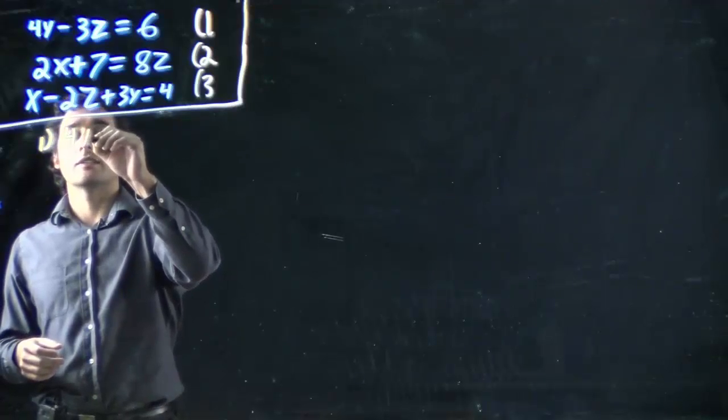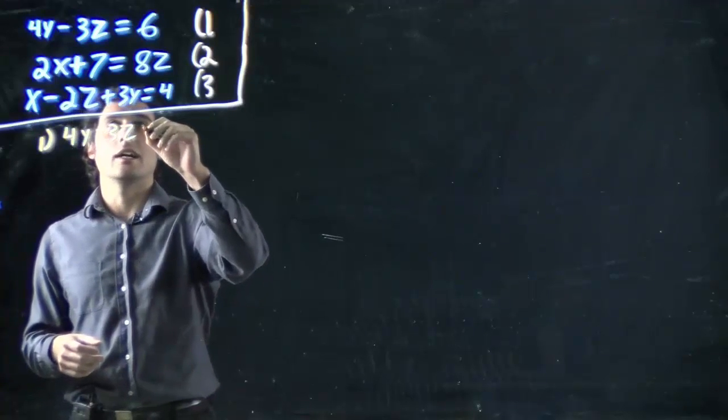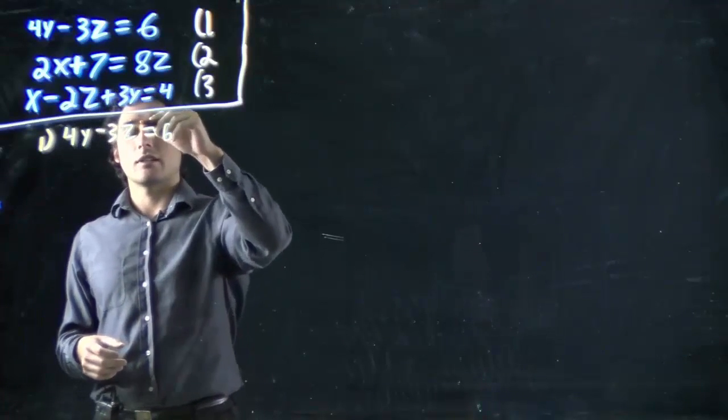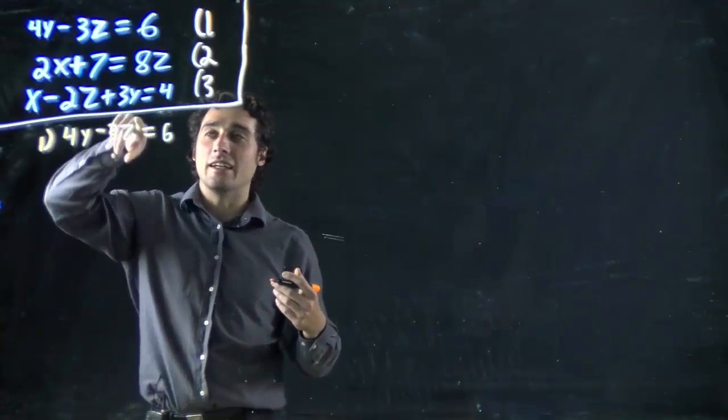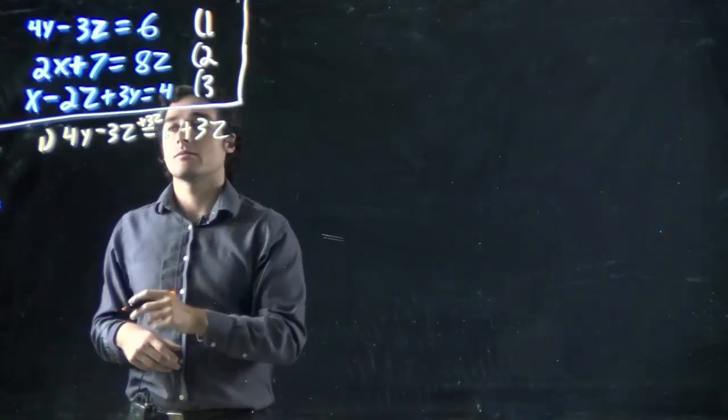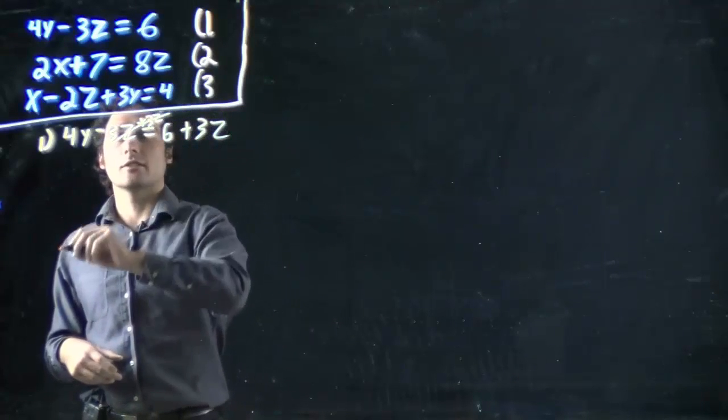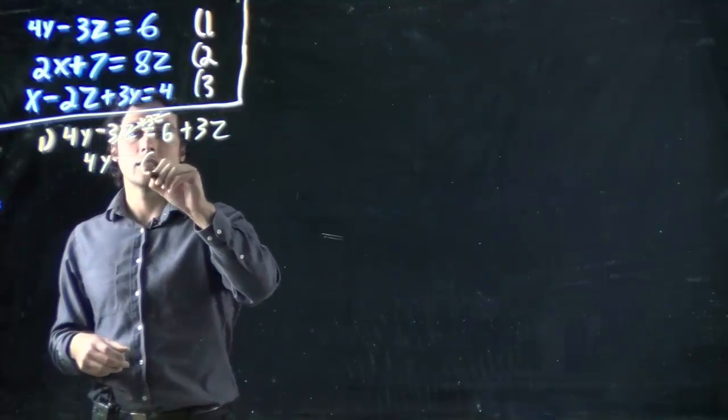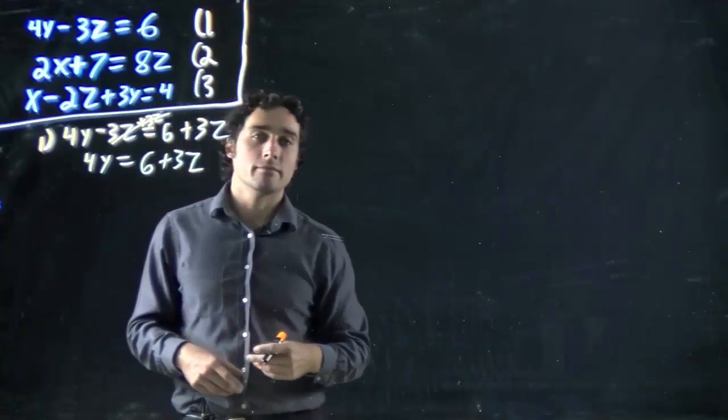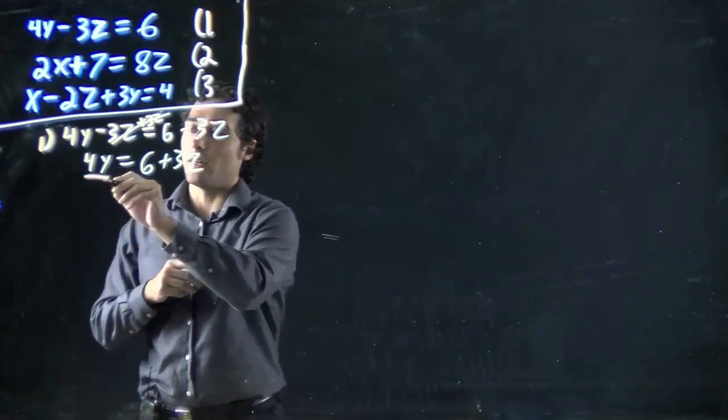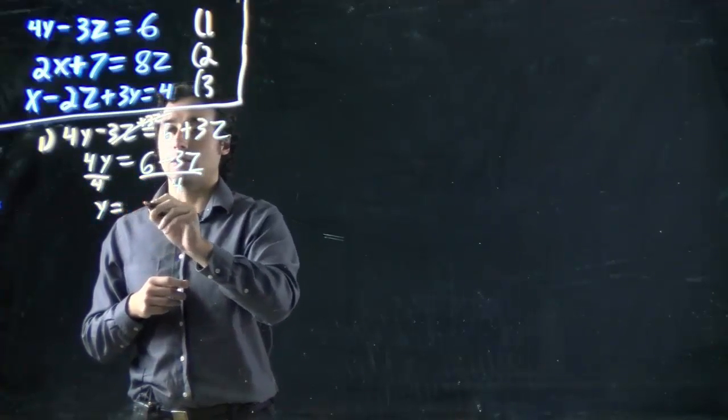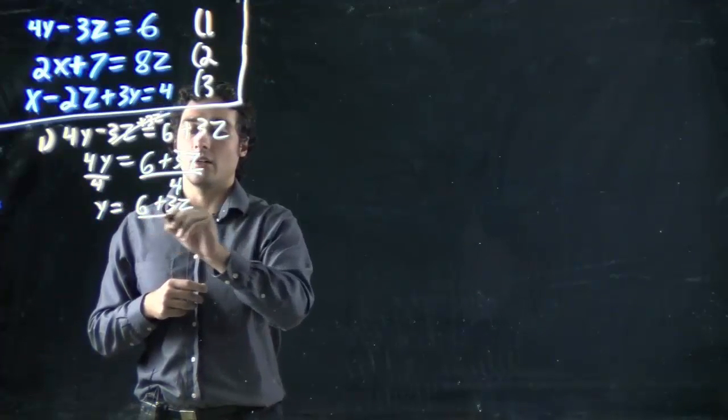We are going to solve this in terms of y. 4y minus 3z equals 6. We want to get y on its own. I've got to do reverse bed math. I'm going to try and get rid of 3z, add 3z to both sides. These will cancel. 4y equals 6 plus 3z, and I need to get rid of this 4. The 4 is multiplying y. As always, I will divide by 4. Now I can say y equals 6 plus 3z all over 4. I now know what y is.